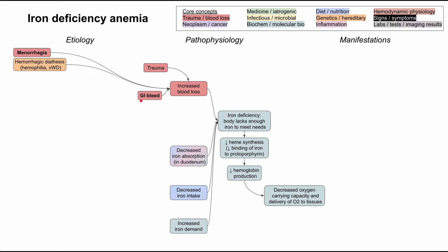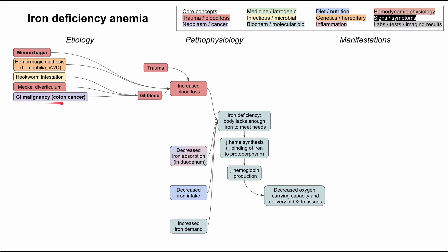A common cause in older people is GI bleeds. Less common causes include Meckel's diverticulum and hookworm infestation. But mainly, when you have iron deficiency in an older patient, you want to check for a GI bleed to make sure they don't have a GI malignancy like colon cancer, which can cause slow bleeding into the stool leading to iron deficiency.